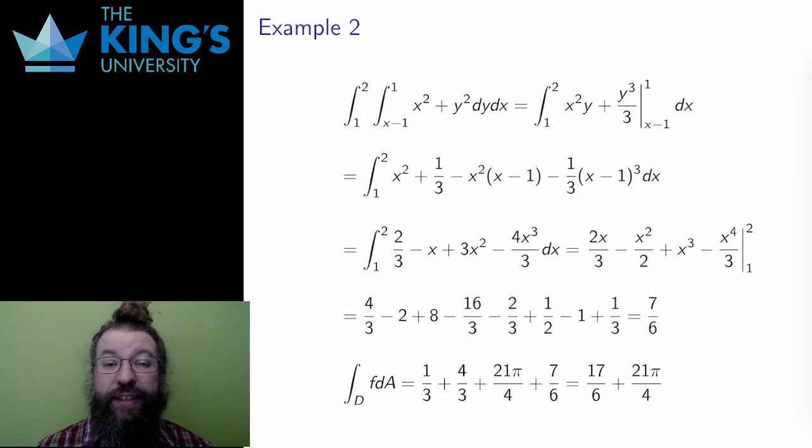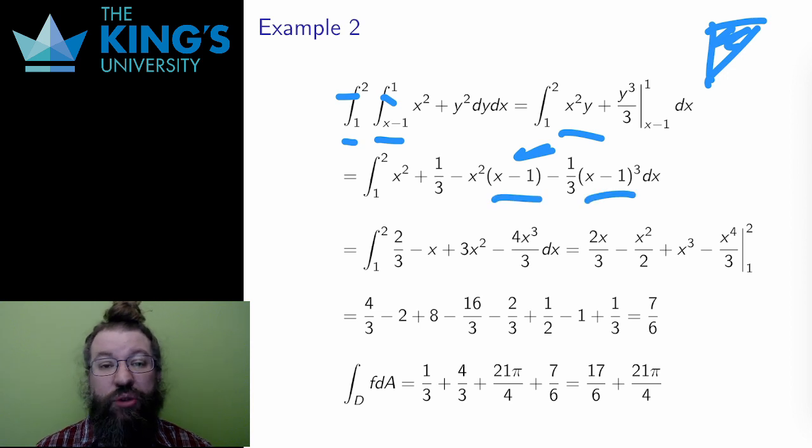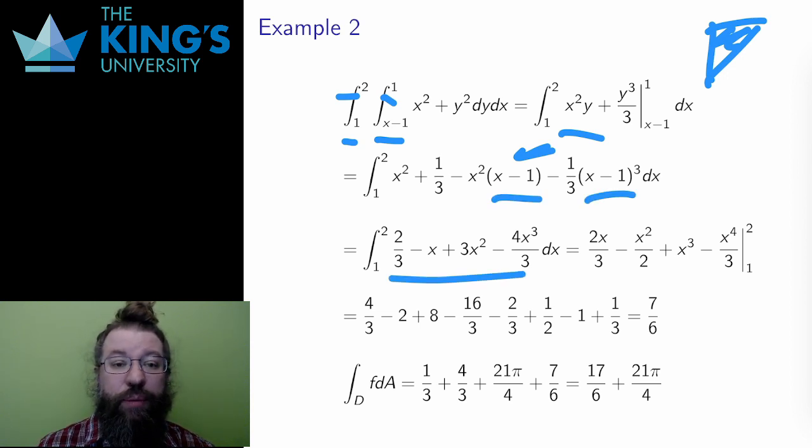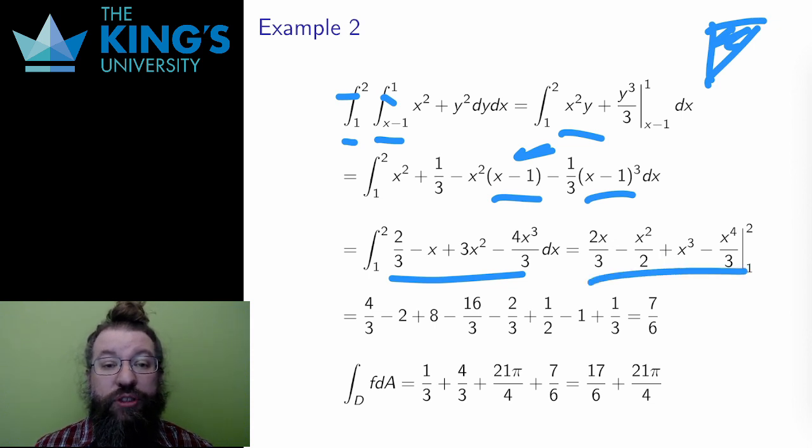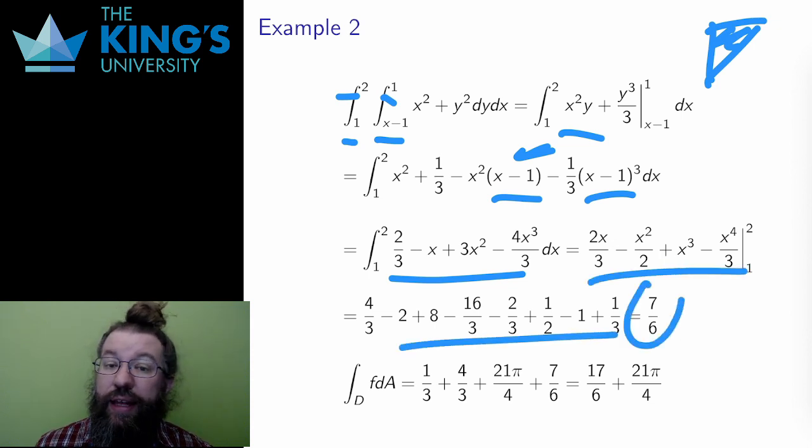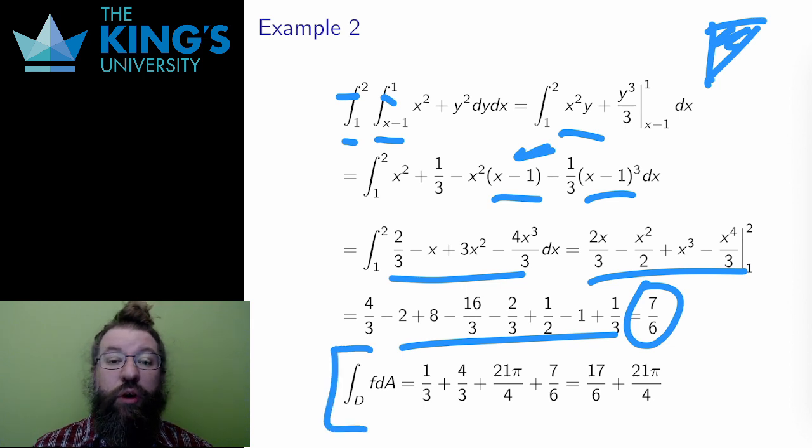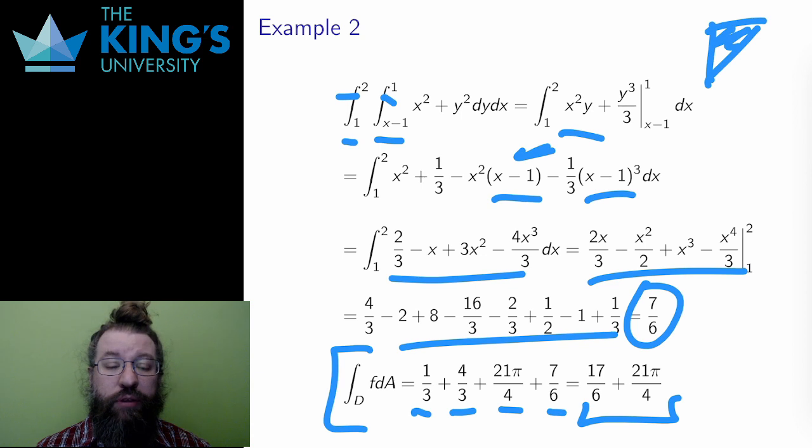The third piece is the other triangle with these bounds, and I integrate in y and then evaluate on the bounds. And here I have to cube out a binomial, which again is annoying, but I do so. And I simplify the polynomial to get a normal x integral. And I've not shown all the arithmetic here, but the result is 7/6. And then the total integral is the sum of all three pieces, which works out to 17/6 + 21π/4. That's the volume of the function integrated over that whole region that I had to split into three pieces to understand.